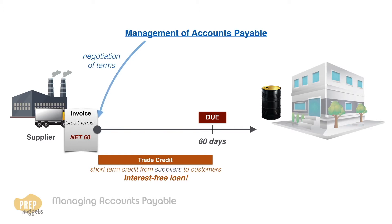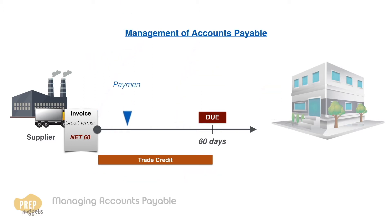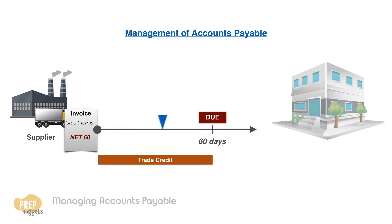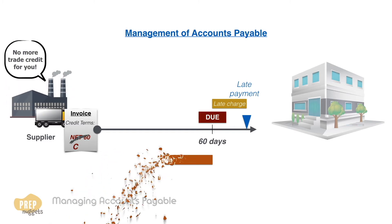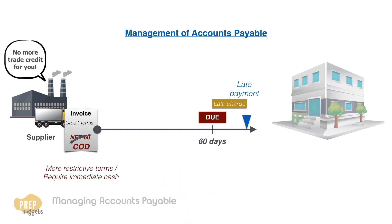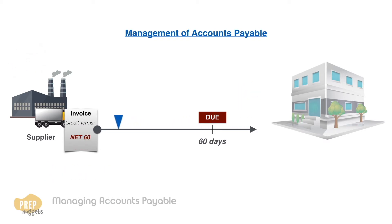Management of accounts payable involves not just the negotiation of credit terms with suppliers, but also the scheduling of payments. If the company pays its payables prior to their due dates, cash is used unnecessarily and interest on it is sacrificed. If a company is late on payments, a late charge can be imposed with heavy interest rates, which can damage relationships with suppliers and lead to more restrictive credit terms or even require immediate cash as payment. Some suppliers encourage early repayment by giving a discount for early payment.